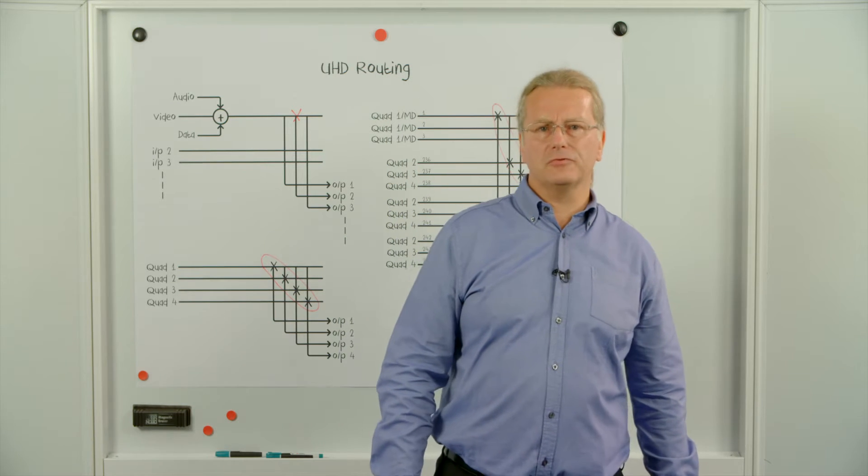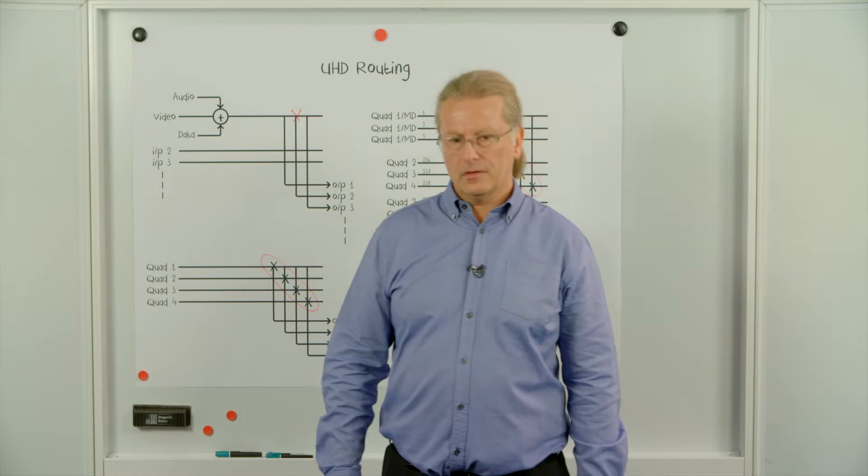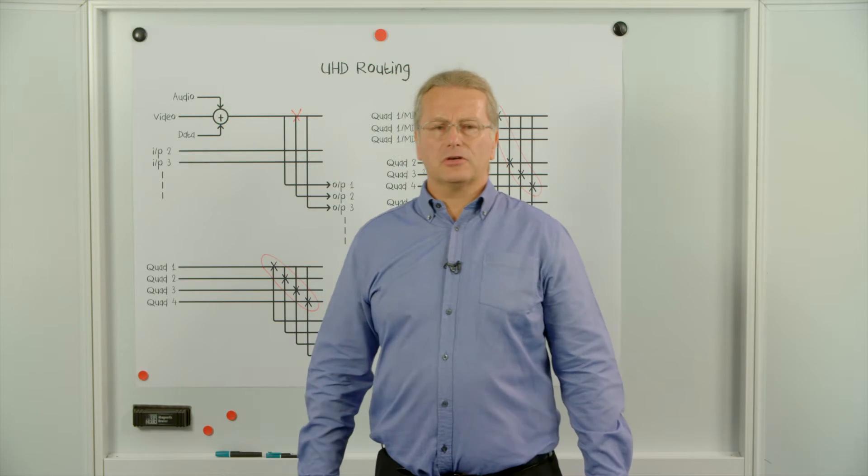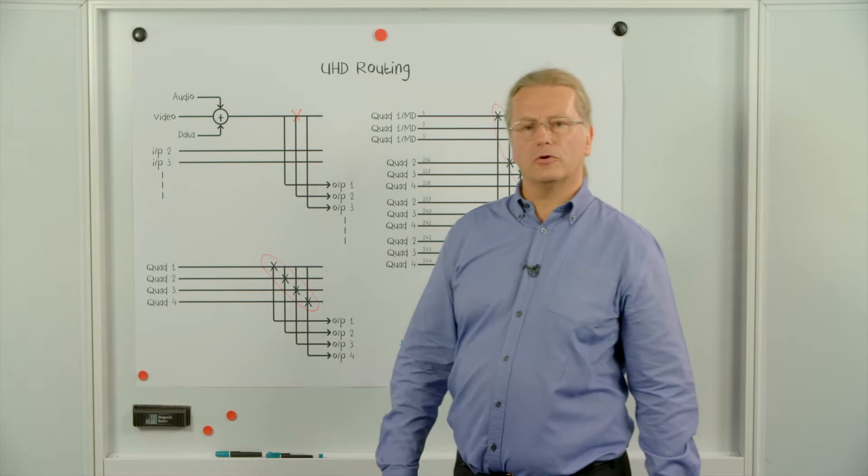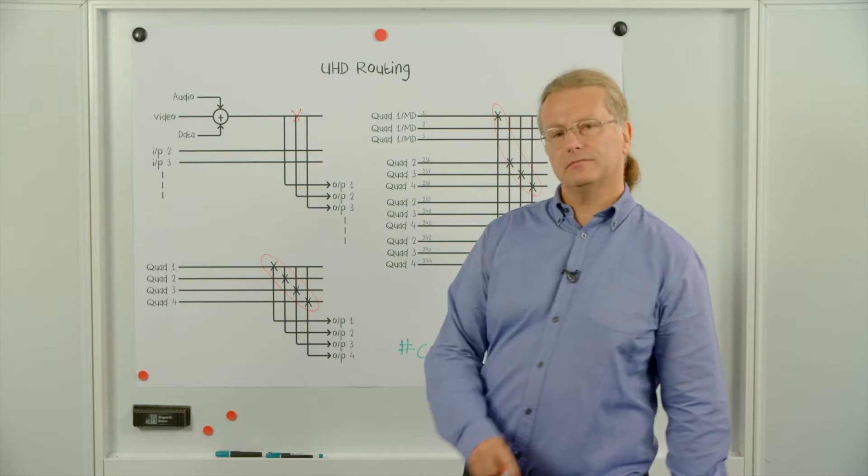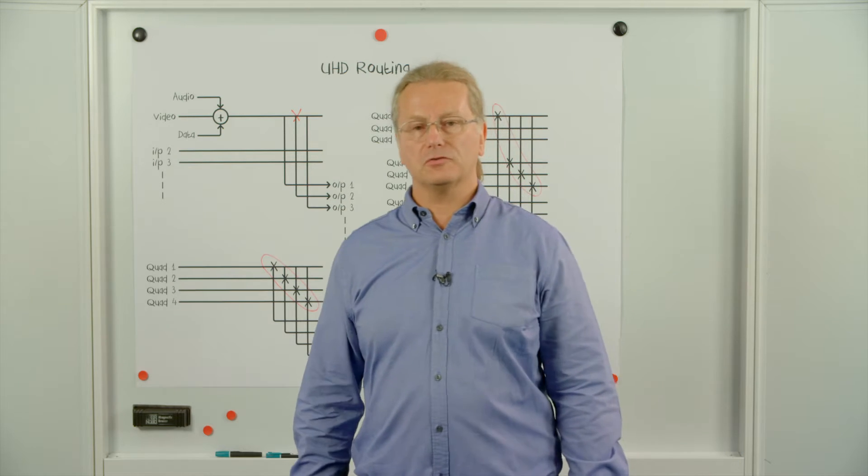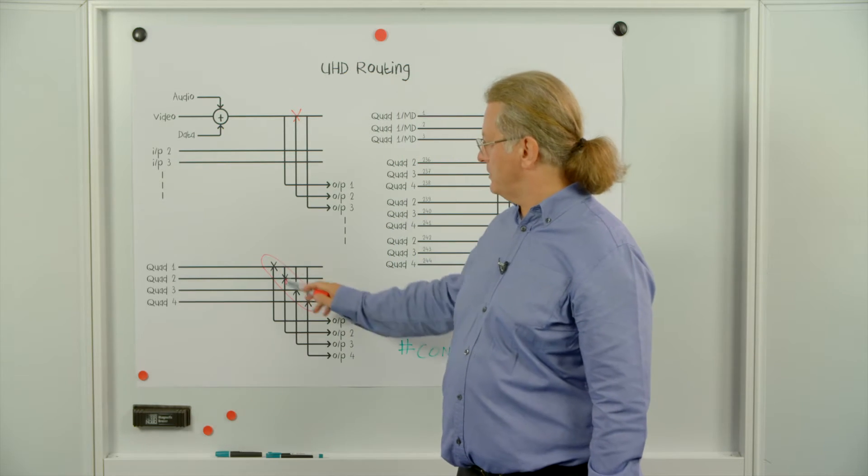However, UHD signal routing is not so easy. UHD signals are commonly made up of four individual cables carrying four quadrants. So therefore, four cross points need to be made. And the easiest way of making these cross points is to manually make each one individually.